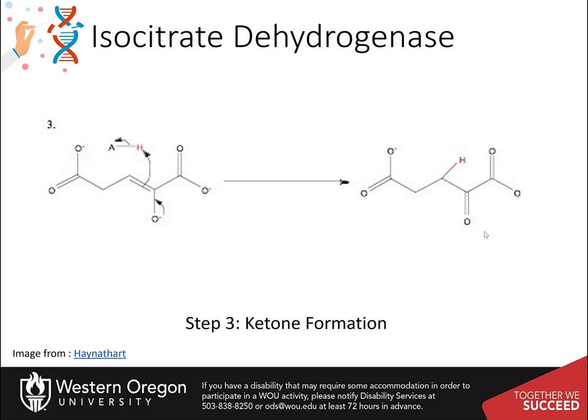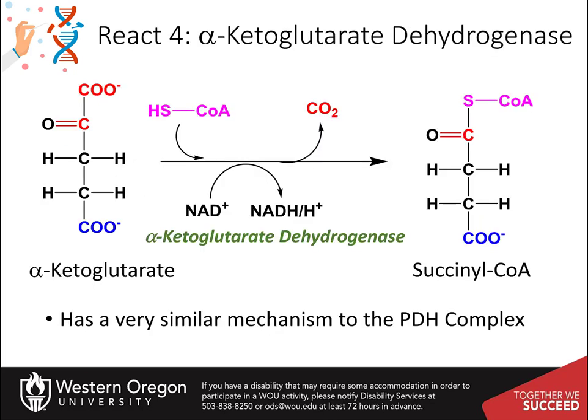Take a moment to compare this mechanism with that found in the pyruvate dehydrogenase complex and that of the glyceraldehyde-3-phosphate dehydrogenase from the glycolytic pathway. This exemplifies the many different ways dehydrogenase enzymes can work to oxidize biological molecules. The alpha-ketoglutarate dehydrogenase (KGDH) has a reaction mechanism that is very similar to pyruvate dehydrogenase (PDH complex).